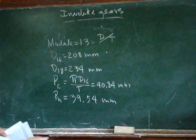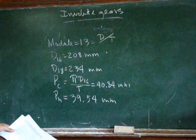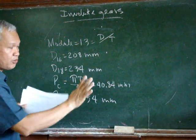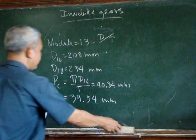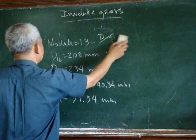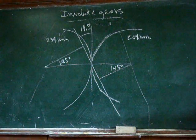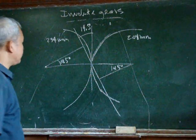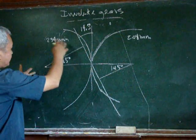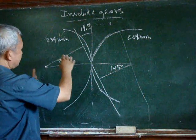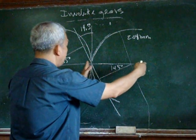So with this data, and of course, we also know the data about addendum, we can draw the two gears. And this shows our two mating gears, with the big gear here, and the other small gear on this side.